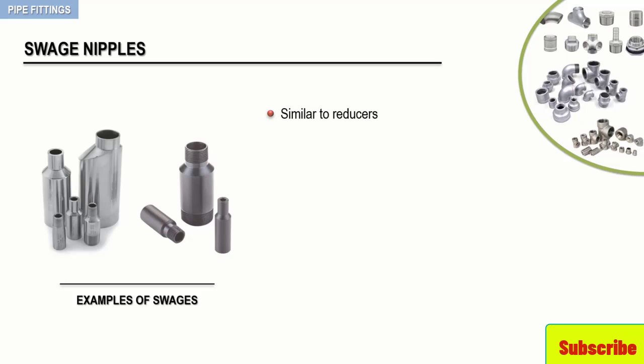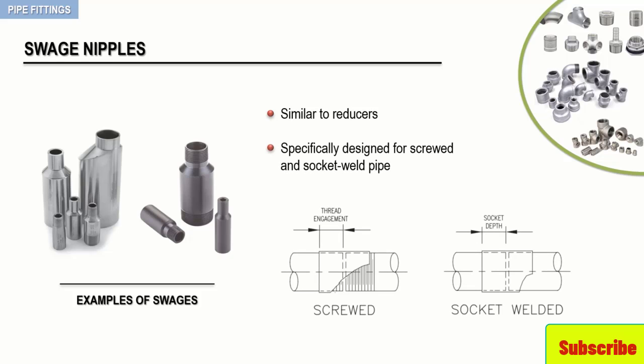Swages are specifically designed for screwed and socket weld pipe. Screwed swages have external threads and are connected directly to other screwed fittings without the need of a pipe nipple. Like reducers, they are available in either a concentric or eccentric shape, as depicted here.